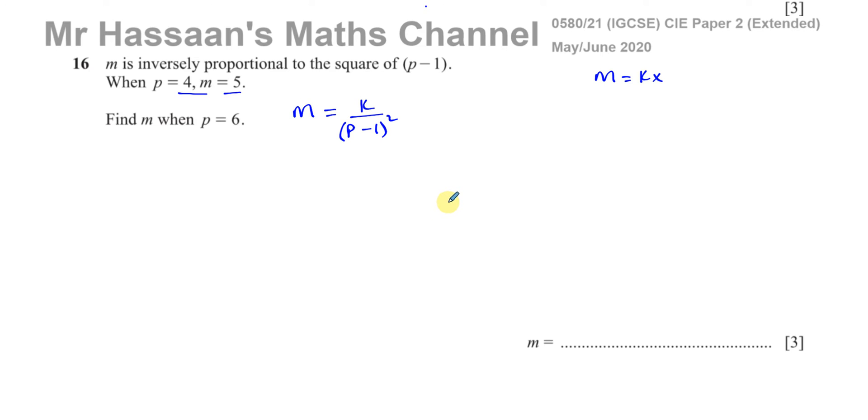So what we need to do first is find the value of k by taking the pair of values that they gave us, substituting them into the equation that we formed, and finding what k is.